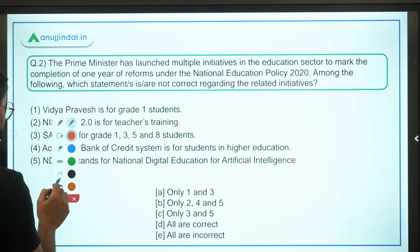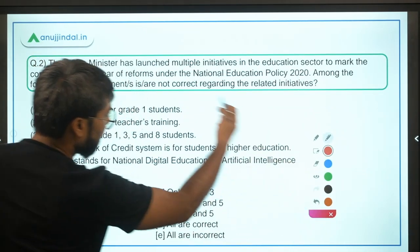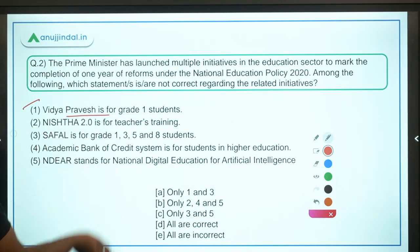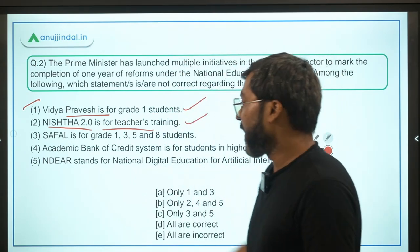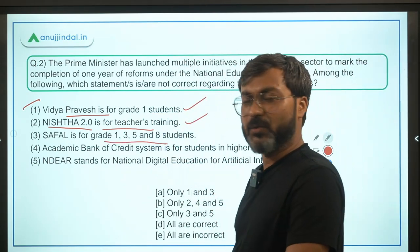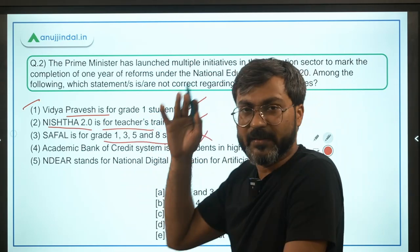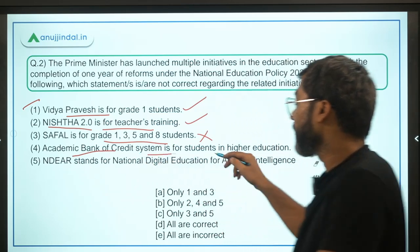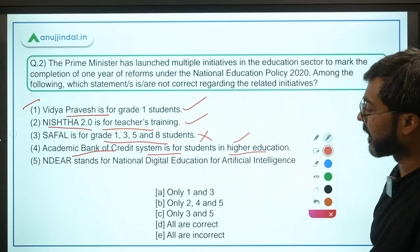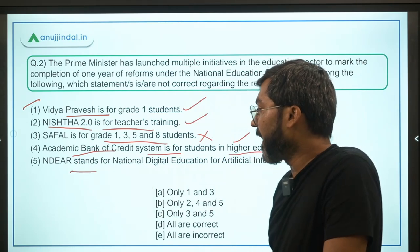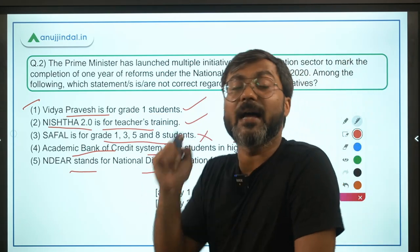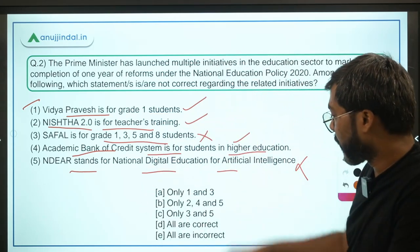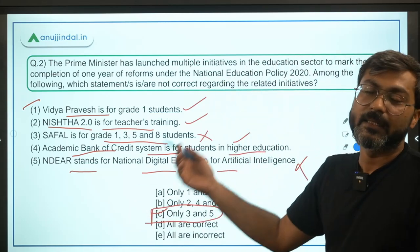Coming back to the question: you have to identify the incorrect statements. Vidya Pravesh is for Grade 1 students — correct. NISHTHA 2.0 is for teacher training — correct. SAFAL is for Grade 1, 3, 5, and 8 students — incorrect, it is only for grades 3rd, 5th, and 8th. Academic Bank of Credit is for higher education students — correct. NDEAR stands for National Digital Education Architecture for AI — incorrect, it stands for National Digital Education Architecture. So statements three and five are incorrect — option C is the correct answer.